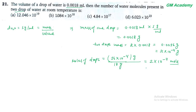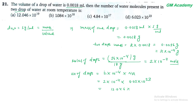Number of molecules निकालने के लिए moles को Avogadro number से multiply करेंगे: 2 × 10⁻⁴ × 6.02 × 10²³ = 12.046 × 10¹⁹. यह value दिए गए option में match करती है।